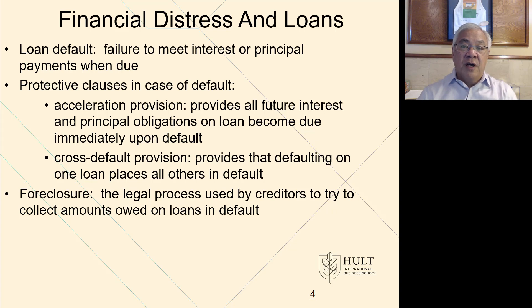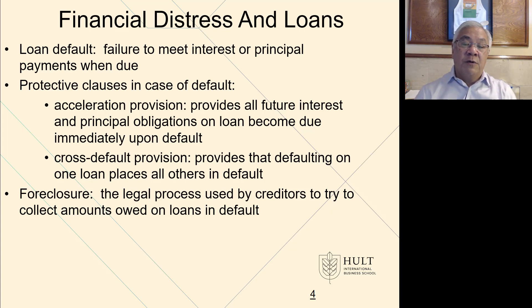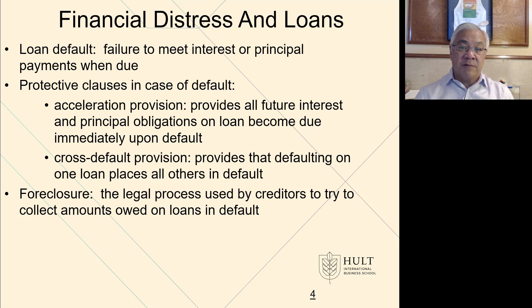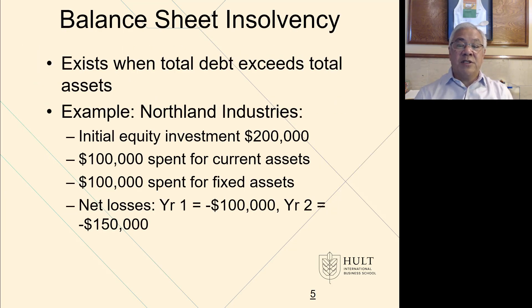Next is foreclosure, where the bank doesn't think the company will make it on its own and starts implementing foreclosure proceedings, meaning they can take over the assets of the company — some pledged as secured items, or the general assets as well. This is when it gets really serious, where the bank is going to put you out of business by taking assets you probably need to run your business. Next is balance sheet insolvency — a very simple, clean definition.